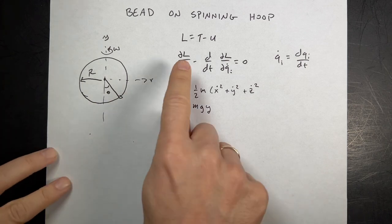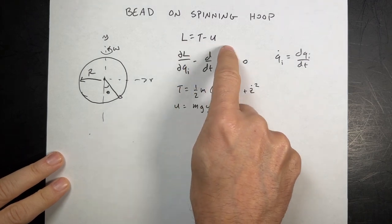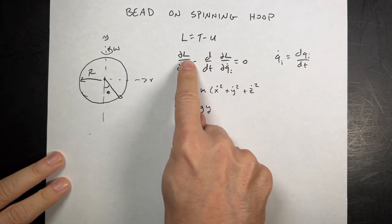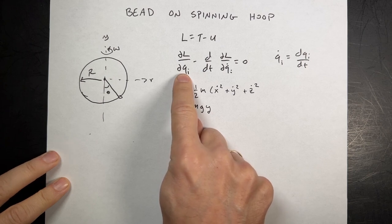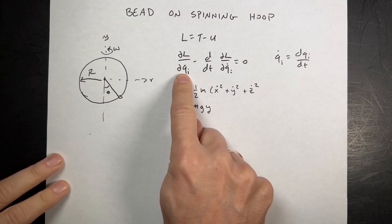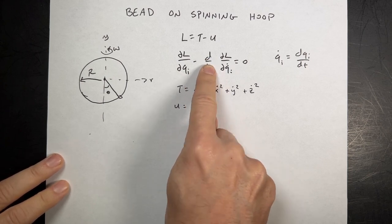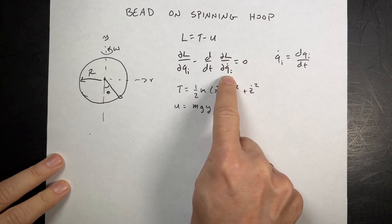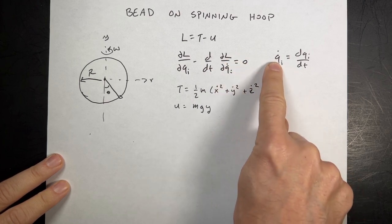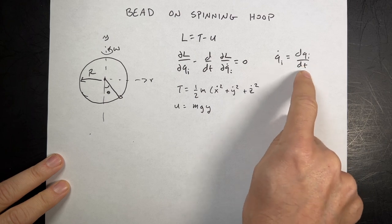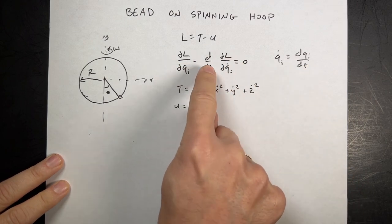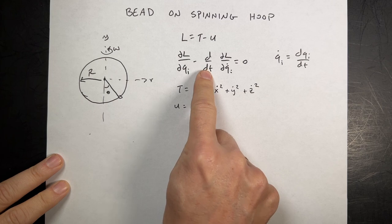Now I can say the Lagrangian is kinetic energy minus potential energy. The Euler-Lagrange equation says the partial of L with respect to one of the variables — I only have one — minus the time derivative of the partial of L with respect to the derivative of that variable, q_i dot, equals zero. So we can get an equation of motion from the Euler-Lagrange equation.